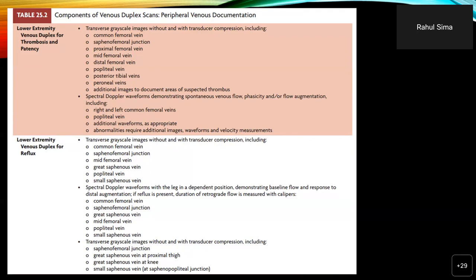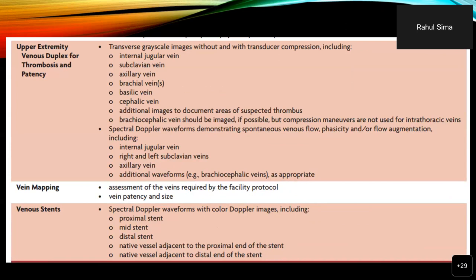Components of a venous duplex scan of the lower extremity for thrombosis and patency must include the common femoral vein, saphenofemoral junction, proximal femoral, mid femoral, distal femoral, popliteal vein, posterior tibial, and peroneal veins. Spontaneous flow, patency, and flow on augmentation must also be demonstrated. For upper limb venous duplex for thrombosis and patency, this must be done for the internal jugular, subclavian, axillary, brachial, basilic, and cephalic veins, and any additional areas where suspected thrombosis is seen.